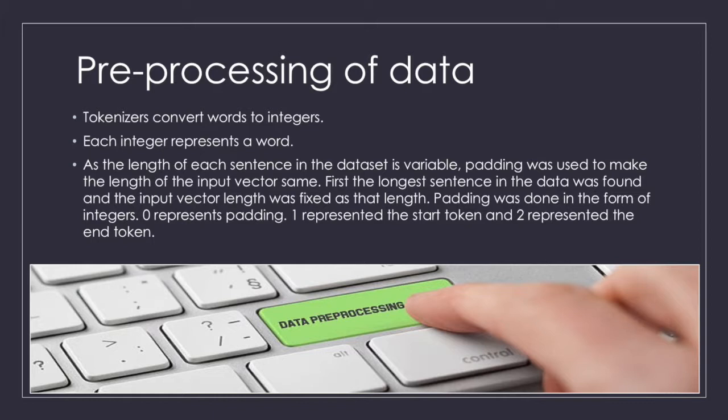Tokenizers convert words to integers. Each integer represents a word. As the length of each sentence in the dataset is variable, padding was used to make the length of the input vector same. First the longest sentence in the data was found and the input vector length was fixed as that length. Padding was done in the form of integers. Zero represents padding. One represented the start token and two represented the end token.